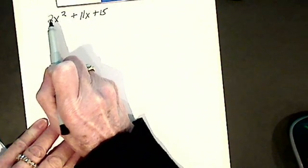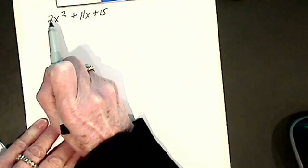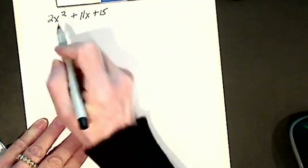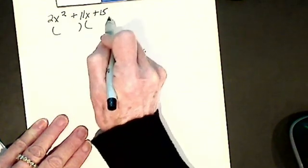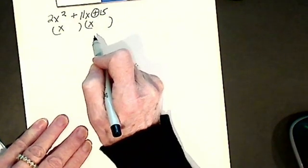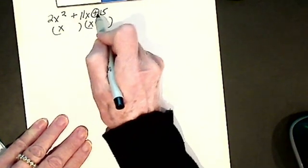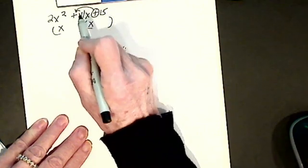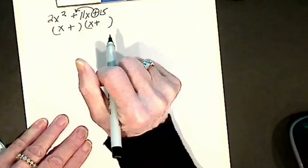what's different is for the first time now we have a number in front of our x squared. So here we go, I factor, I have x, x, a plus tells me the signs are going to be the same plus plus or minus minus. How I know, I look to the middle term. You have to understand that, you have to get your signs right.